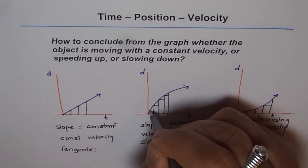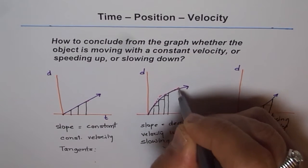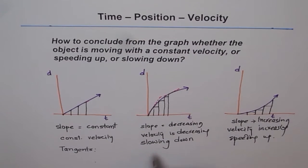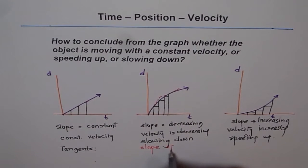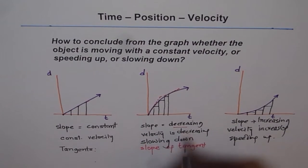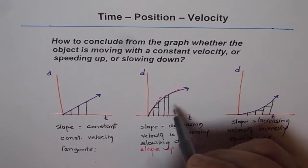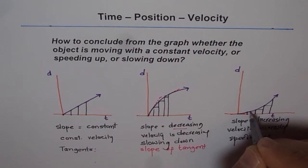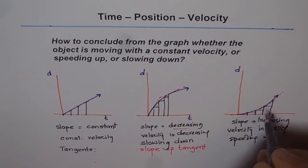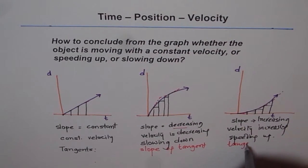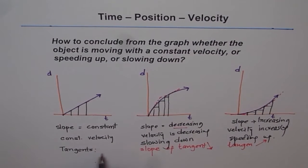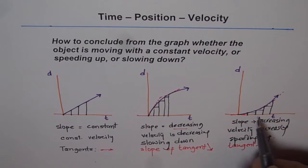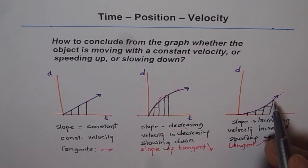Now looking at the tangents on the second curve: the slope is much higher initially, and as we move along it decreases. Since the slope of the tangent decreases, velocity decreases — showing slowing down. On the third curve, the tangent starts at almost zero and then increases, increases further. So the slope of the tangent increases, meaning velocity increases with time — the object is speeding up. On the straight line, the tangent is constant the same all over.